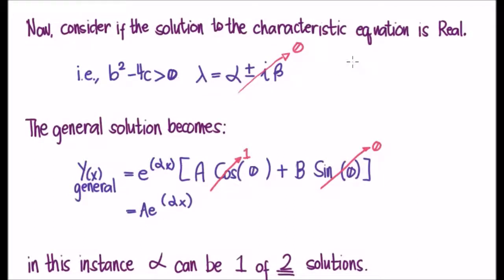So remember, we're going to have two solutions to our characteristic equation, lambda plus and lambda minus. Except this time, they're both going to involve only a real component. So essentially, we're going to have alpha plus and alpha minus.